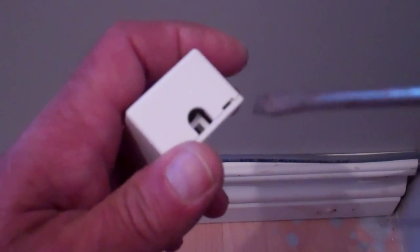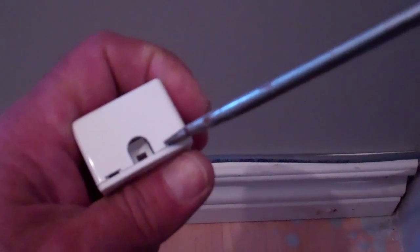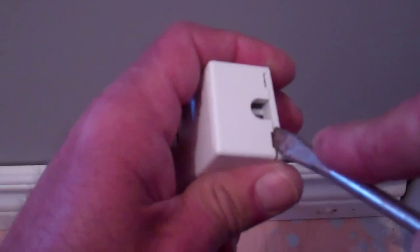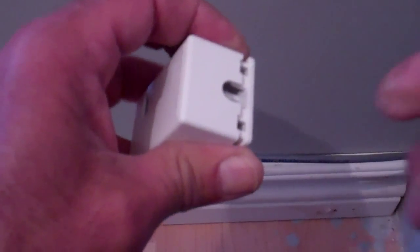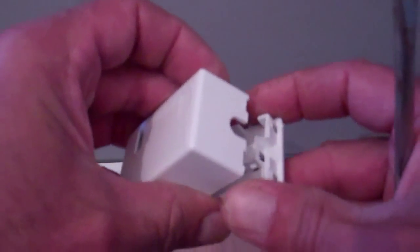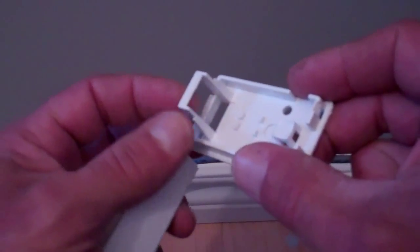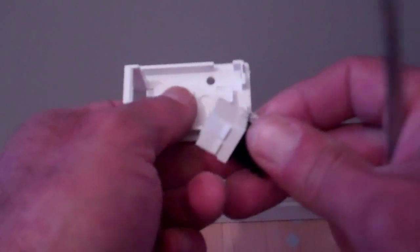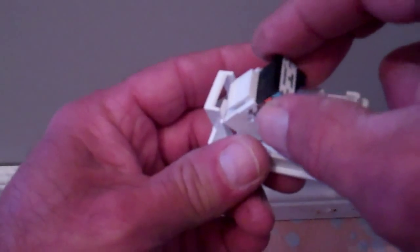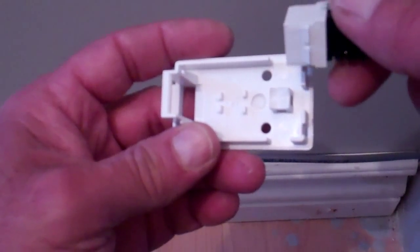If we take a flat head screwdriver and pry that off and have a look at what's inside here, this is where our termination for the Cat 5 cable is going to slide into. We'll do that a little bit later on.